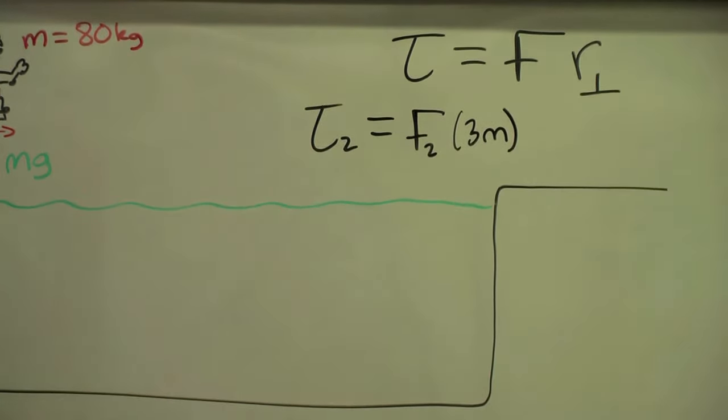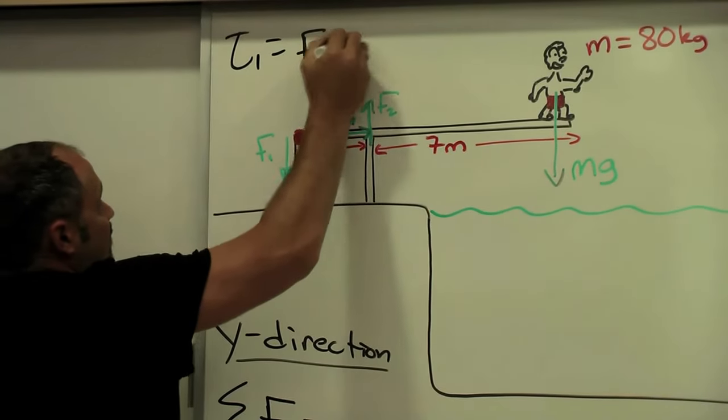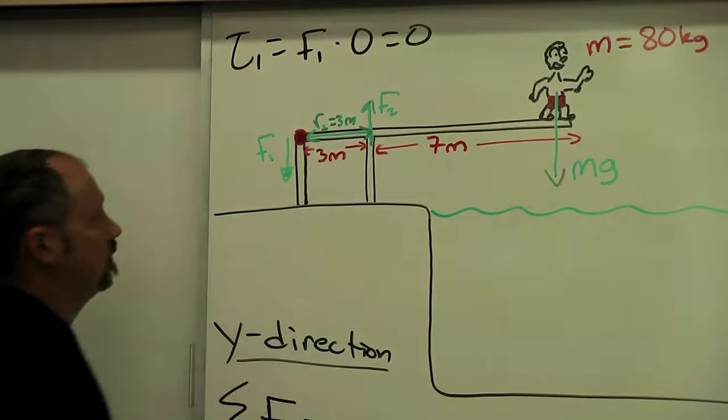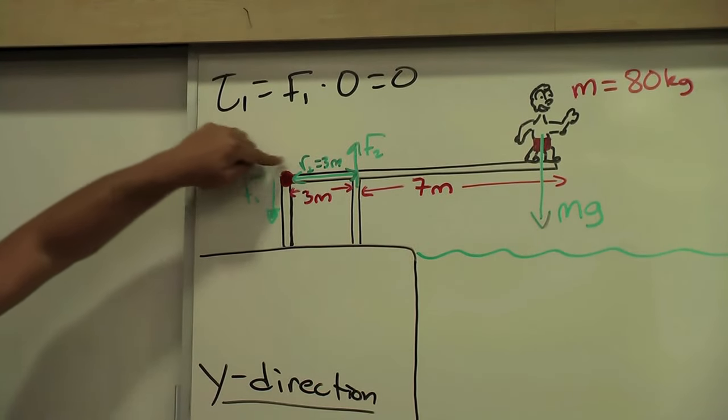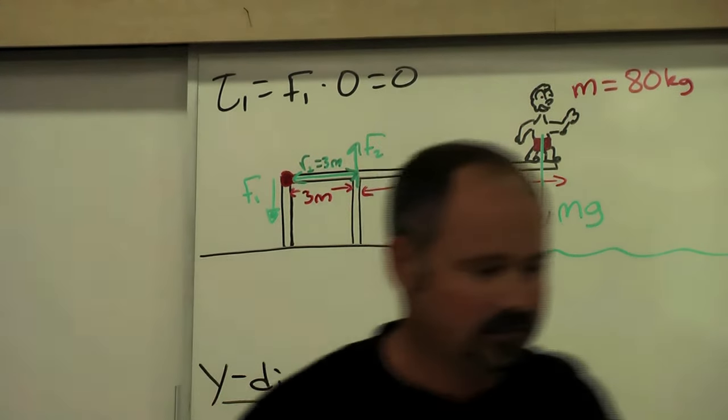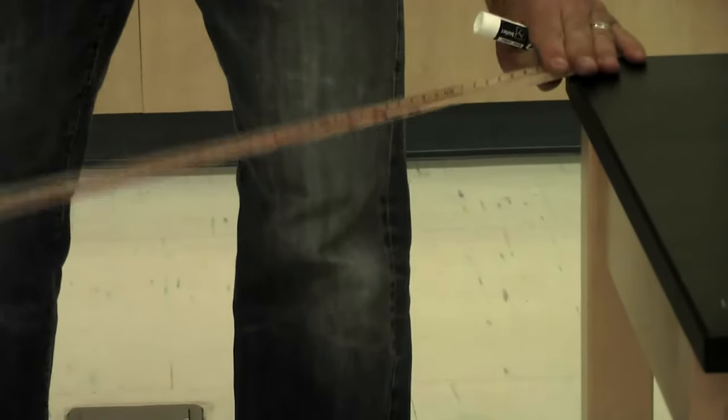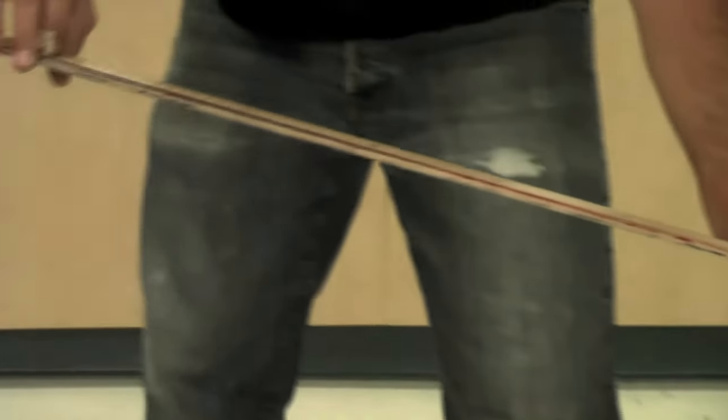Well we also have F1 but we don't have to worry about F1 because the torque on F1, I'll put it here, F1 times zero equals zero. So when I choose a pivot point right here it eliminates the torque from this guy. I mean you can think about it, if this is the pivot, the rotation axis, there's no torque right here. But if I have a mass here it's going to provide a torque and make it rotate.